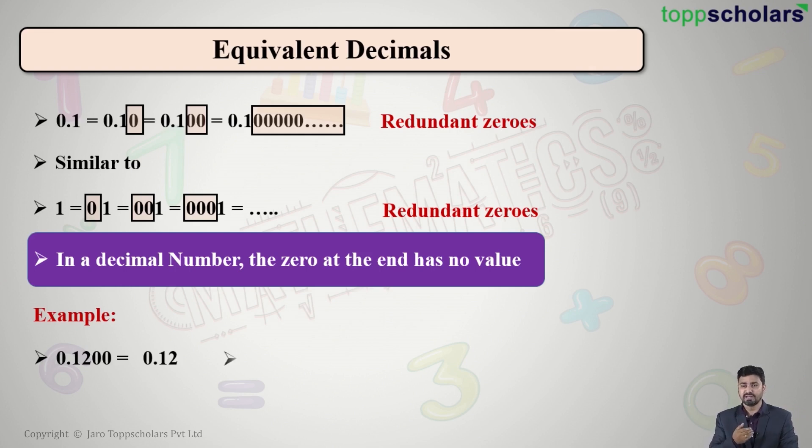Similarly, if I take another number 0.1320, how many zeros at the end? One. I can remove that zero, it is a redundant zero. Hence, the actual decimal number is 0.132. Let us take one more example: 0.50. Here the actual value will be 0.5 because the zero at the end has no value.